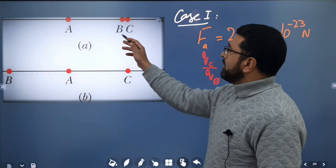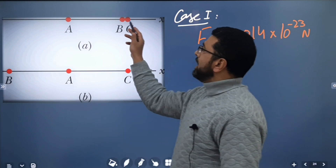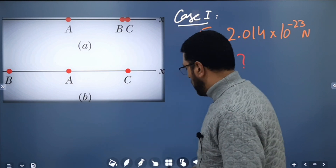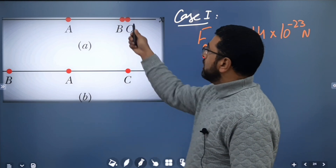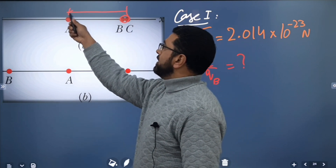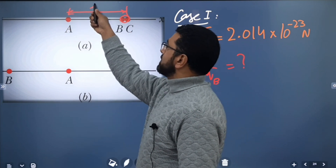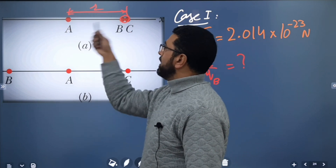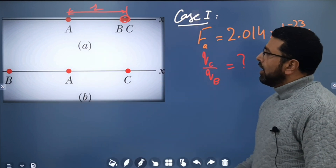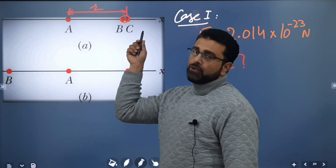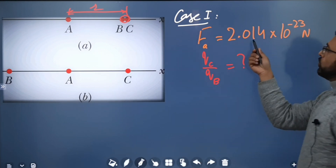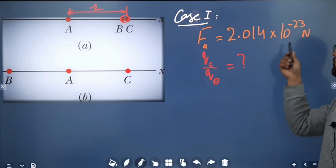So we are given three particles A, B, and C — all of them are positive. In the first case, B and C are very close to each other, almost at the same position. Their distance from A is the same; we'll call that distance r.